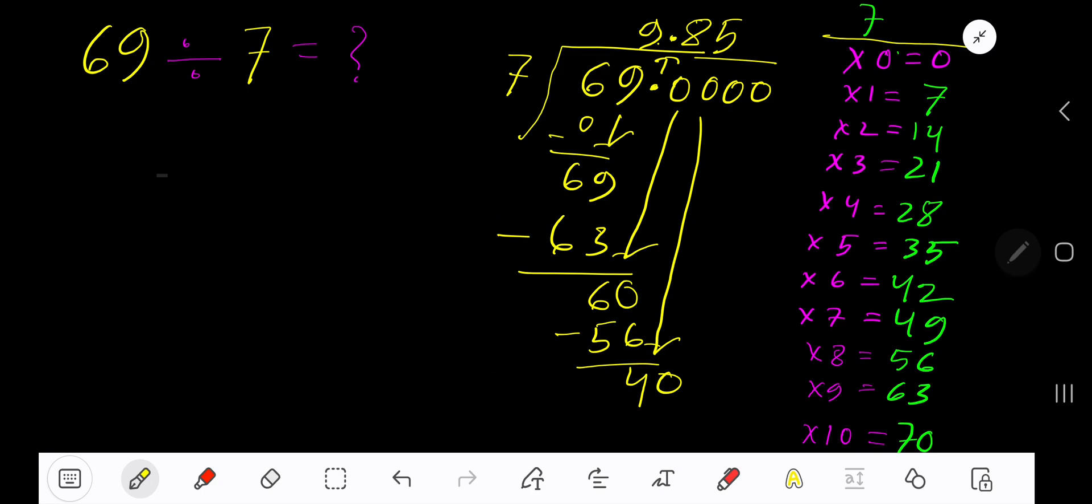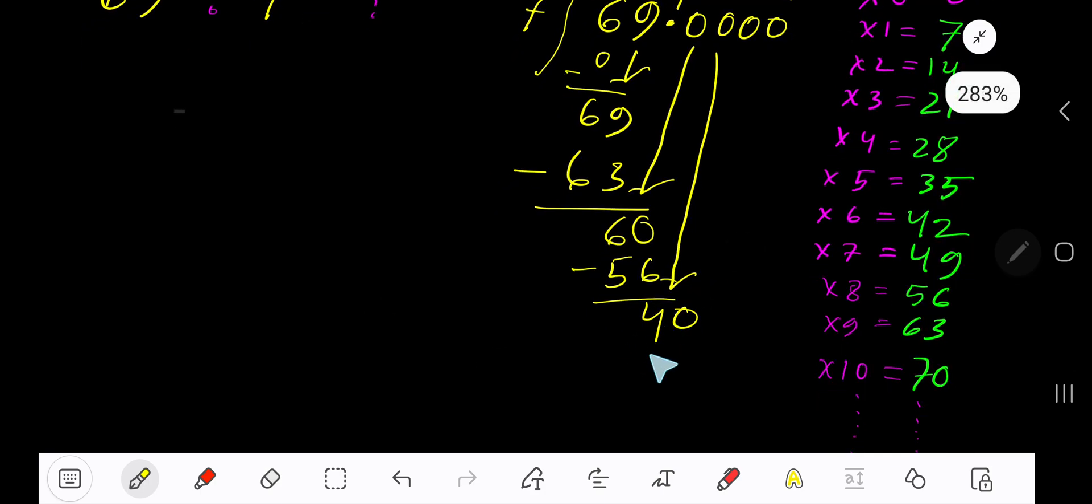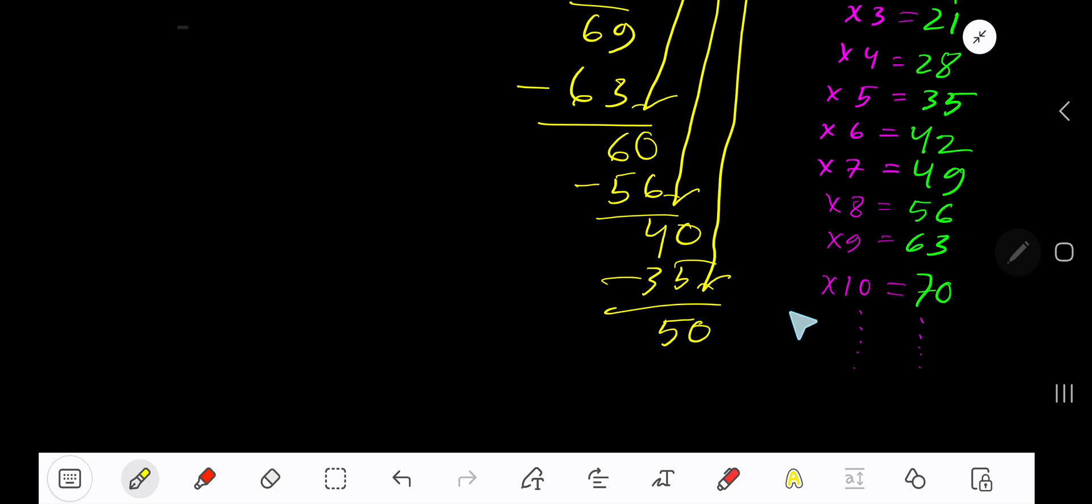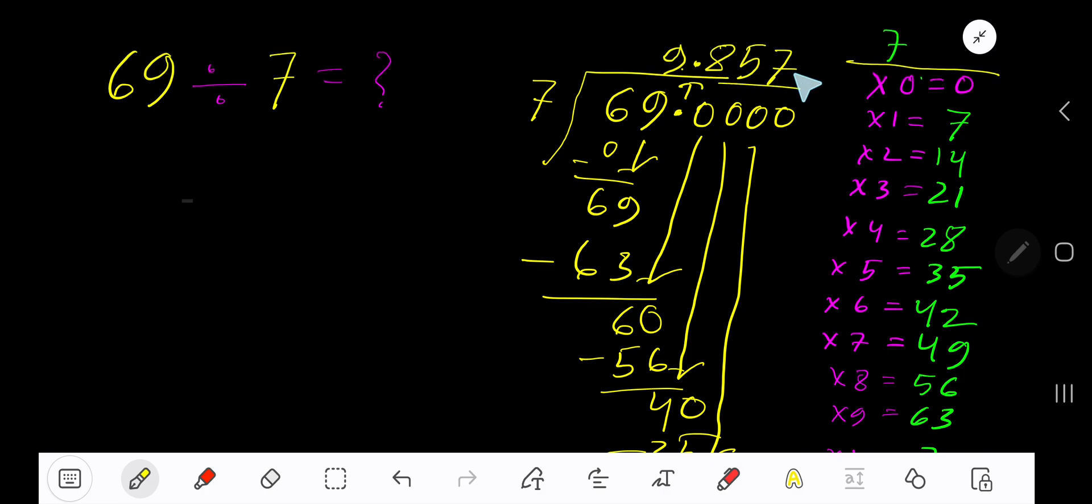You can bring down one more 0. 7 goes into 50 how many times? 8 times 56, which is greater, so 7 times. 7 times 7 is 49. Subtract, 1. You can bring down more 0, but since we have gotten 3 places after a decimal, just add 3 dots. So our answer is 9.857 dot dot dot.